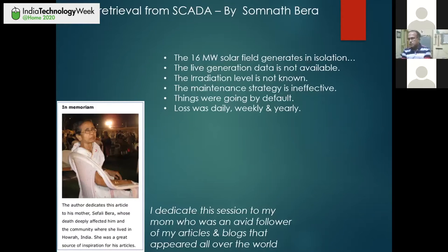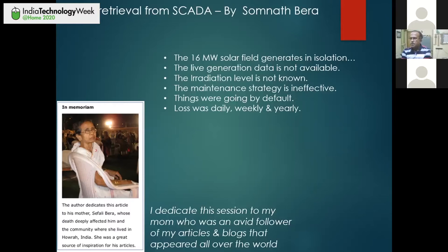When the saga started, this power plant had a very old 16 megawatt solar field generator that was quite a distance away from the main thermal power plant, and it was generating power in isolation. It was a very old unit — 16 megawatt solar PV fields scattered across around 20 acres of land. There was no monitoring device to know the live generation, and the irradiation level — how much solar energy is available — was not available.